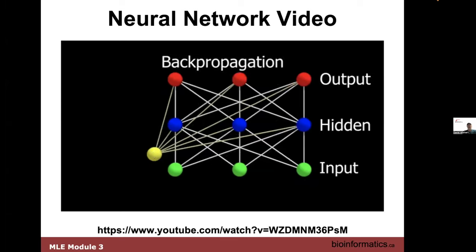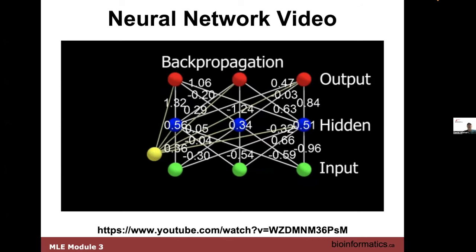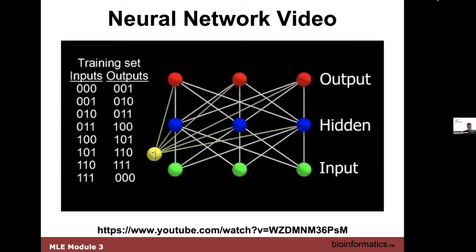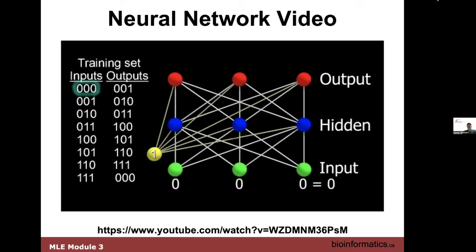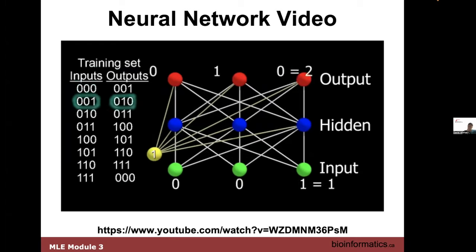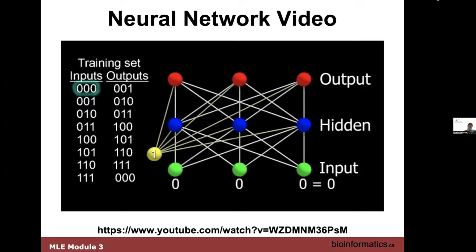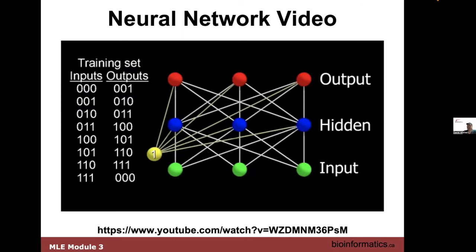To train it we use the back propagation algorithm — called that because first we go forward through the network from input to output, then propagate back from output to input, adjusting things. We start by making a training set consisting of inputs and what we expect as output for each input. At the start of training, all the weights are just random numbers.